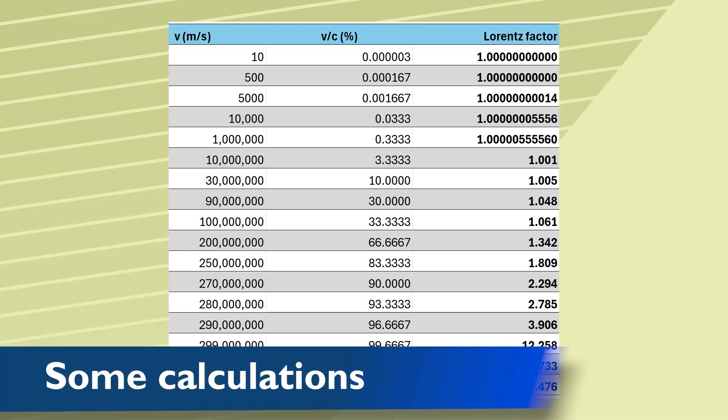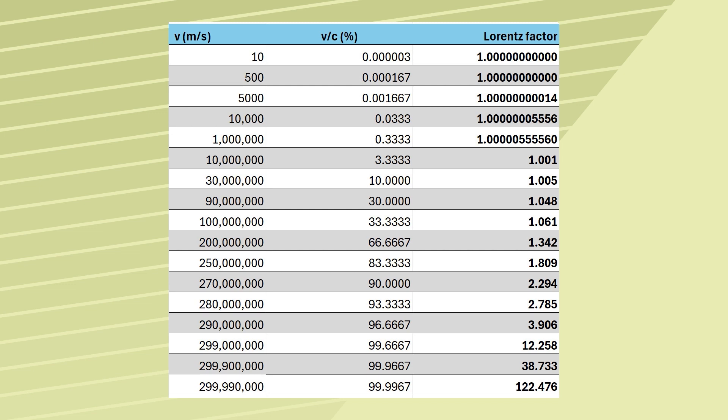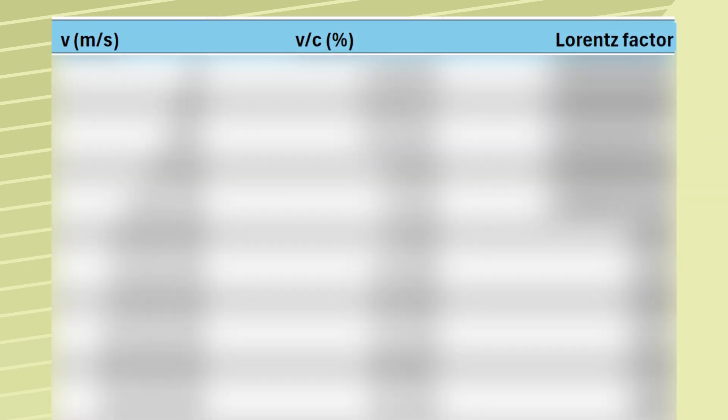This chart attempts to show how the Lorentz factor changes with velocity. You can see that I've expressed velocity in meters per second, but also as a percentage of the speed of light in the middle column. When the velocity is small, like 10 meters per second, you can see that as a percentage it's basically zero, and so the Lorentz factor is one. It's not one, but it's as near as makes no odds.